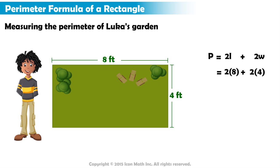Then, he evaluates the expression using the order of operations. Since multiplication comes before addition, he multiplies 2 and 8 to get 16. Then, he multiplies 2 and 4 to get 8.